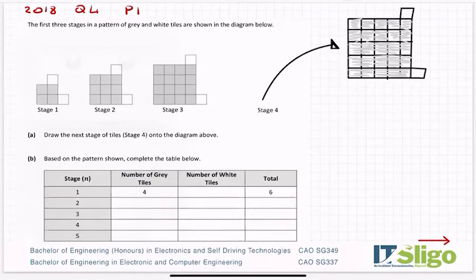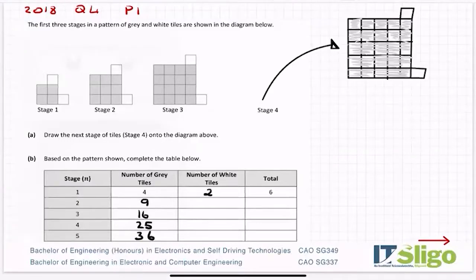So in that first stage there were four grey tiles and two white tiles to give a total of six. Stage two: three threes are nine. Stage three: four fours are 16. Stage four: 25. So stage five must be six sixes, which is 36. The number of white tiles is two in all of them — that doesn't look like it's changing. So then: nine and two is 11, 16 and two is 18, 25 and two is 27, 36 and two is 38. And typically another five marks for completing that table.